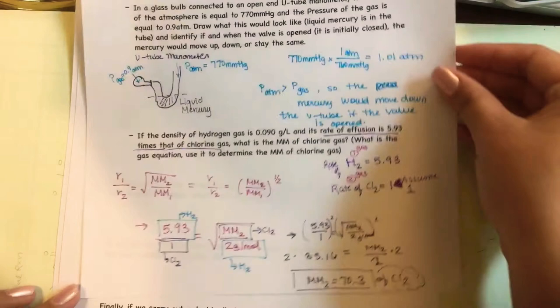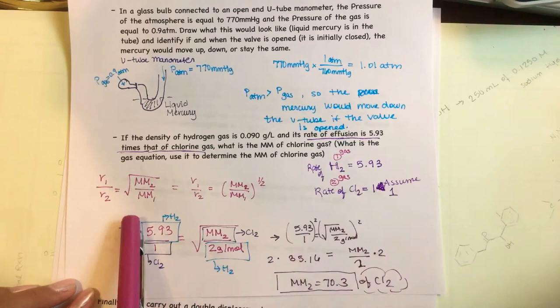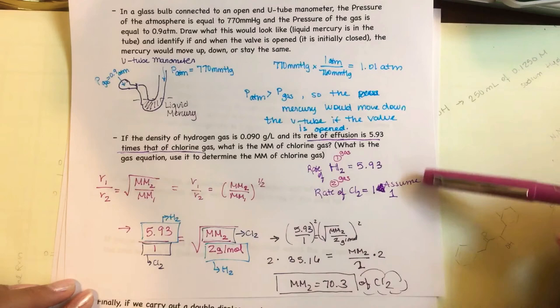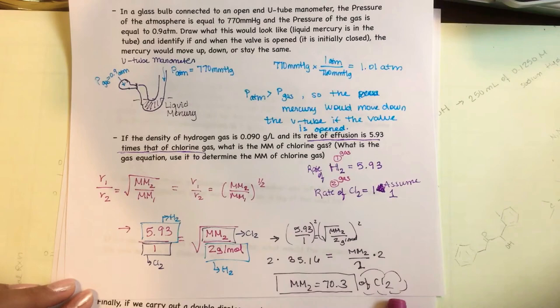This is a question going over Graham's Law of Effusion. We see the formula, and know that 1 over 2 is the same as the square root. This is how we set up the problem, then just plug it in, solve for the molar mass of 2. In this case, we got 70.3 for chlorine.